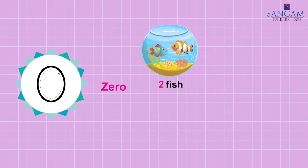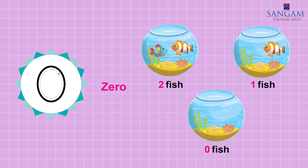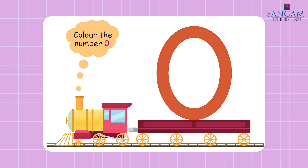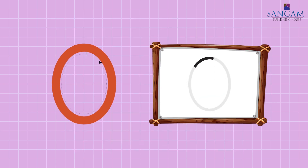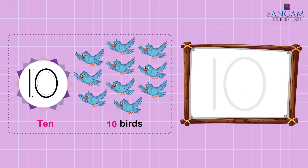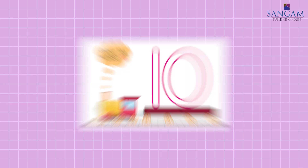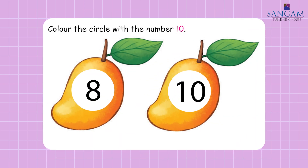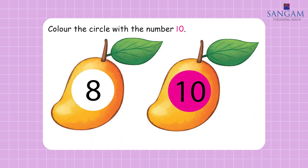Ten. Ten birds. Trace the number ten in the boxes. Colour the number ten. Colour the circle with the number ten.